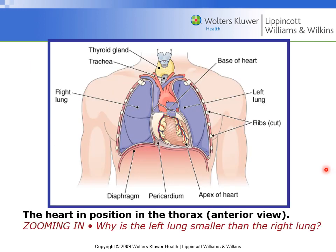Here we are looking at the thorax, anterior view, seeing the heart with the apex pointed towards the left. If we were to draw a line down the center of the torso, we'd know which side is the left, as it relates to the lung and other structures found within it.